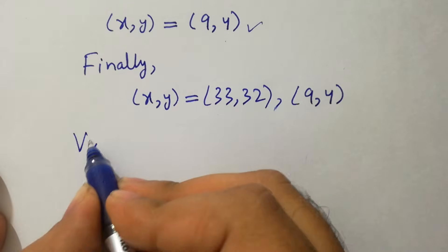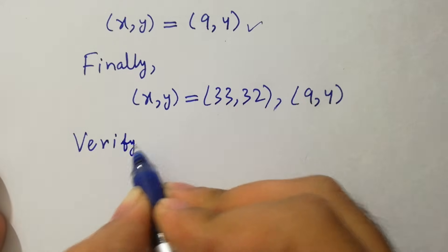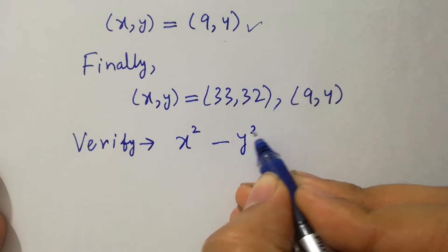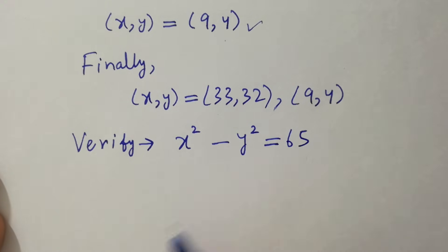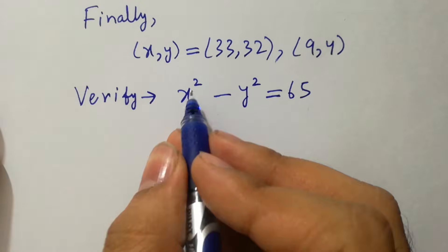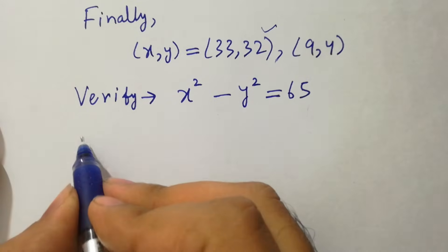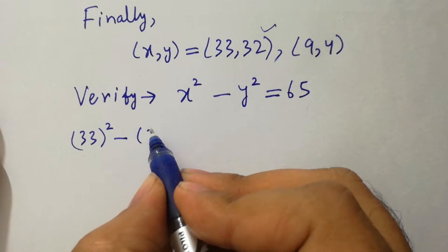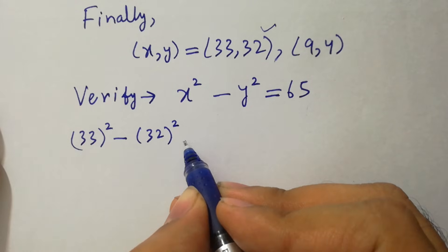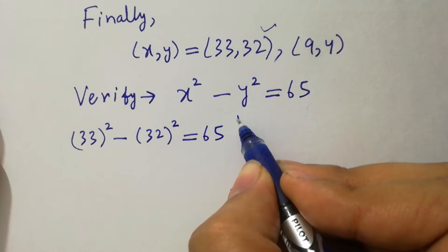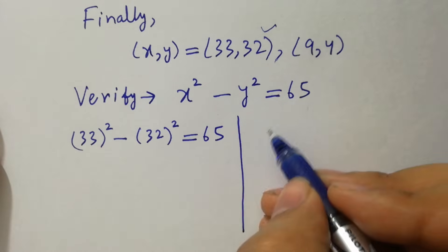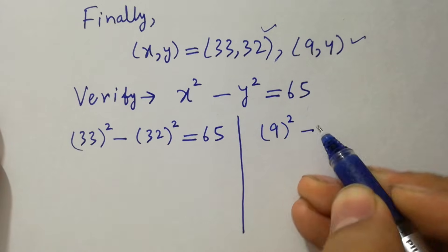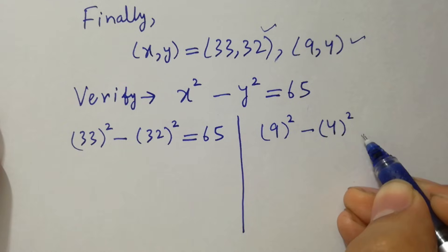In the next step, I am going to verify x squared minus y squared equals 65. Put the values of x and y. We have 33 squared minus 32 squared equals 65. And next, for x equals 9 and y equals 4: 9 squared minus 4 squared equals 65.